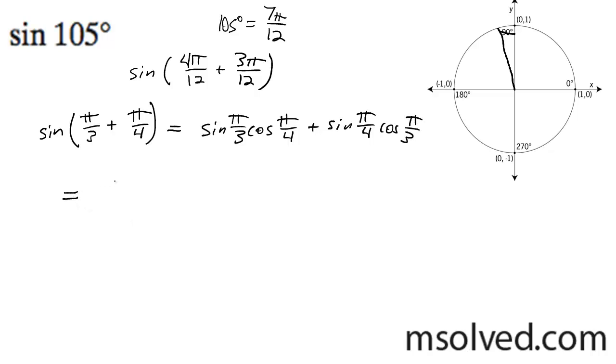Bring this down. Sin(π/3) equals √3/2, cos(π/4) equals √2/2, plus sin(π/4) which is √2/2, times cos(π/3) which equals 1/2.